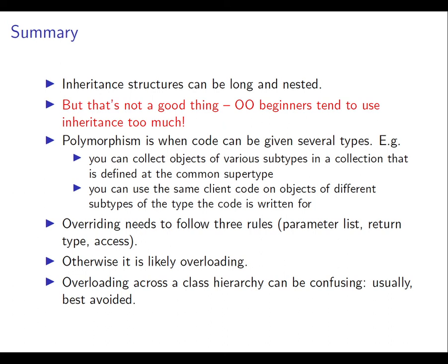Polymorphism is when code can be given several types. We've seen too many examples of that. You can collect objects of different subtypes in a collection that is defined at the common supertype, so we saw ArrayList of Animal for example. You can use the same client code on objects of different subtypes of the type the code is written for. Message sends within the client code will be interpreted at whatever the runtime class of the parameter being passed in is. You get dynamic binding of messages to methods.